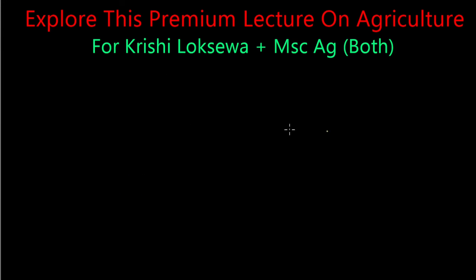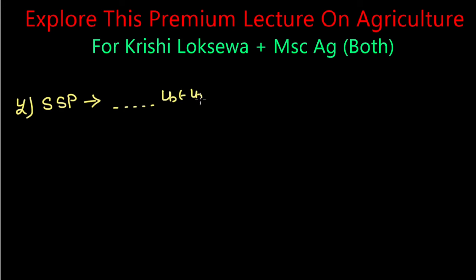The fifth number is Single Superphosphate. Single superphosphate is a phosphorus fertilizer. How can you get phosphorus? With single superphosphate, you will get phosphorus.